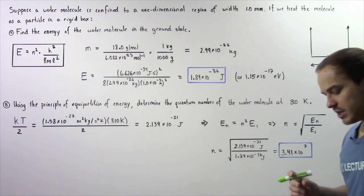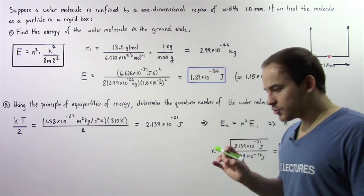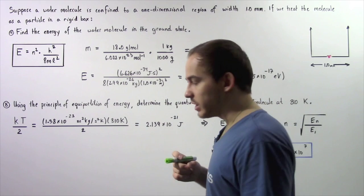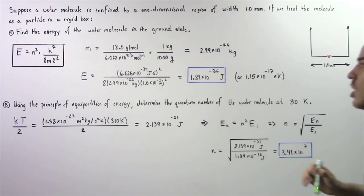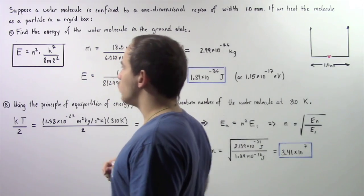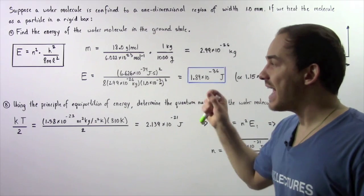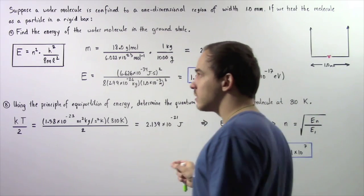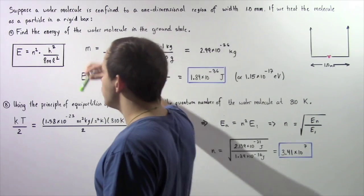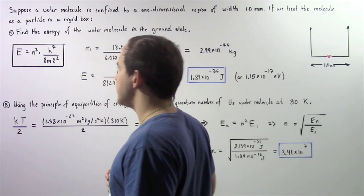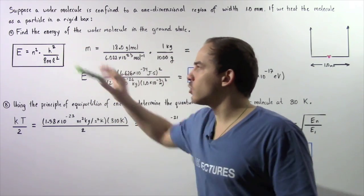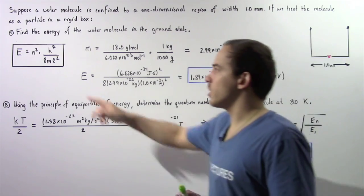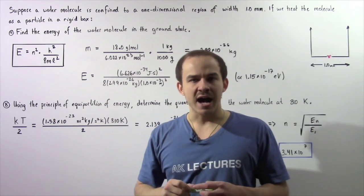Let's begin with part A. Because we're treating our water molecule as if it was moving within a rigid box that has a width of one millimeter, we can apply the following equation that gives us the energy of our water molecule for some particular quantum number N, for some mass M, and for some width given by L, where H is Planck's constant.